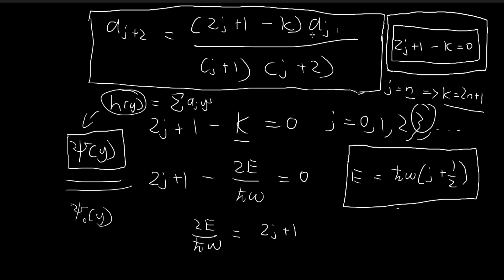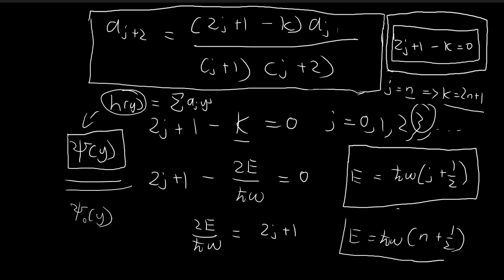Under this choice of k, the recursion formula stops when j reaches n. The constants generated lead to h(y) and then xi(y), which corresponds to the stationary state with energy level equal to h-bar omega times n plus one half. This is the energy level of the quantum harmonic oscillator, matching exactly what we obtained using the algebraic method.